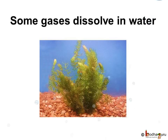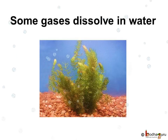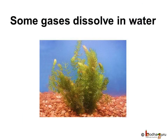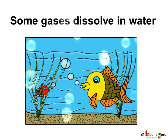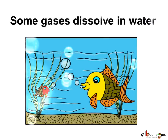Can gases also dissolve in water? How do aquatic plants get air to make their food? Or how do aquatic animals like fish breathe? Yes, some gases like oxygen and carbon dioxide dissolve in water. That is why aquatic plants get their carbon dioxide for photosynthesis and aquatic animals get oxygen for their breathing.